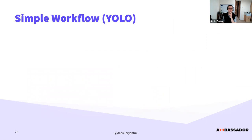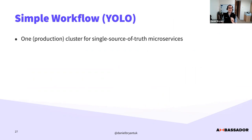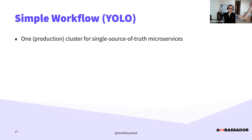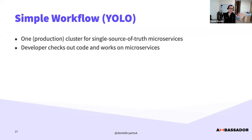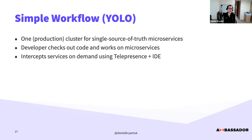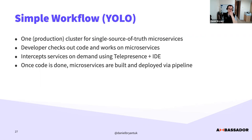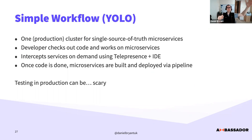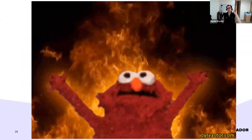There are several workflows. First is the YOLO approach: if you haven't got product-market fit and you're a startup, you can literally use Telepresence in production — one cluster, single source of truth. You check out your code, telepresence in, do your tests. However, once you have more than a handful of customers you need to be careful: even with preview URLs, if you're mutating shared state, end users won't see the UI changes but their data can still be affected.